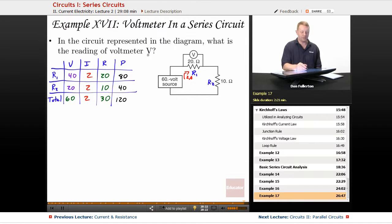So what was the question it asked? What's the reading of voltmeter V? Well, if we look up here at V, V is measuring the potential difference across R1. So I come down to my VIRP table, and I find that the potential difference across R1 is 40 volts.